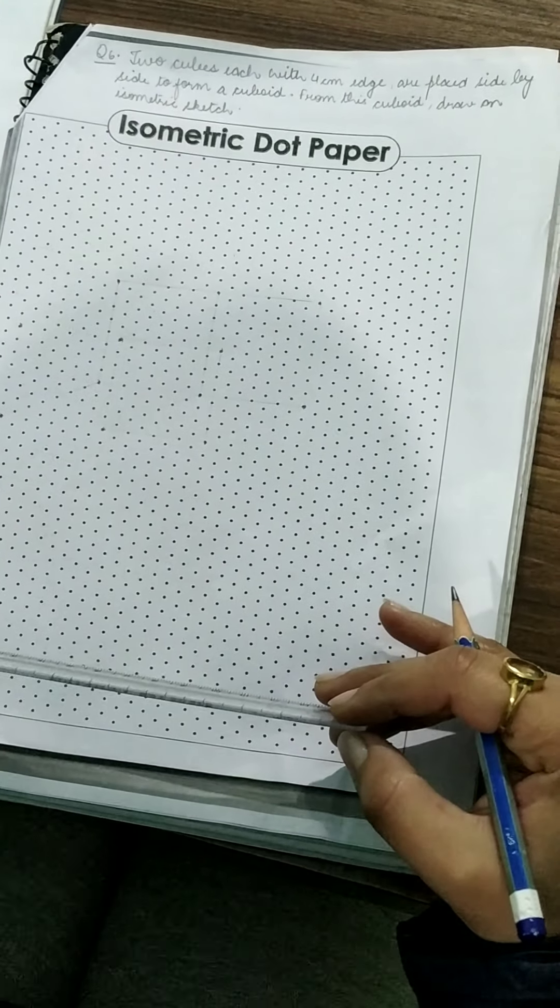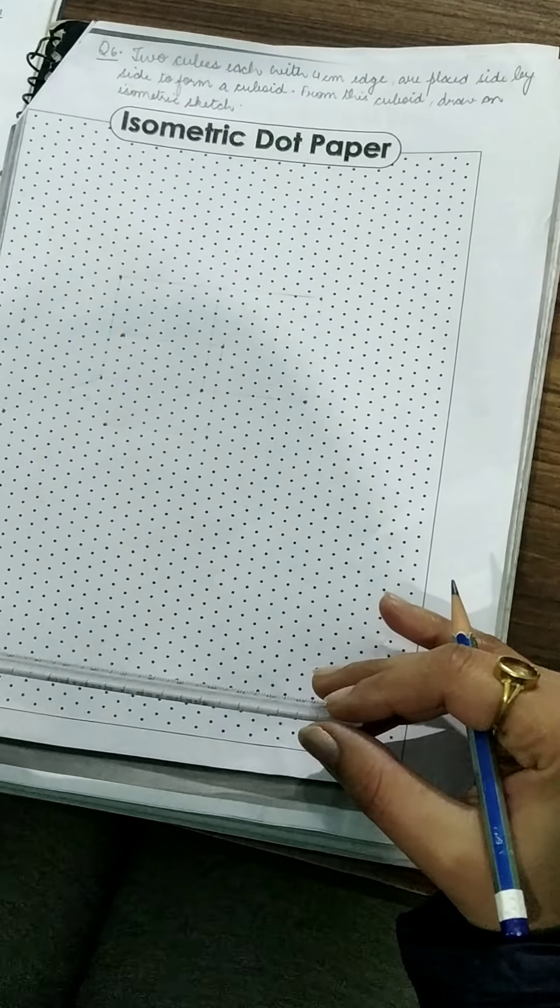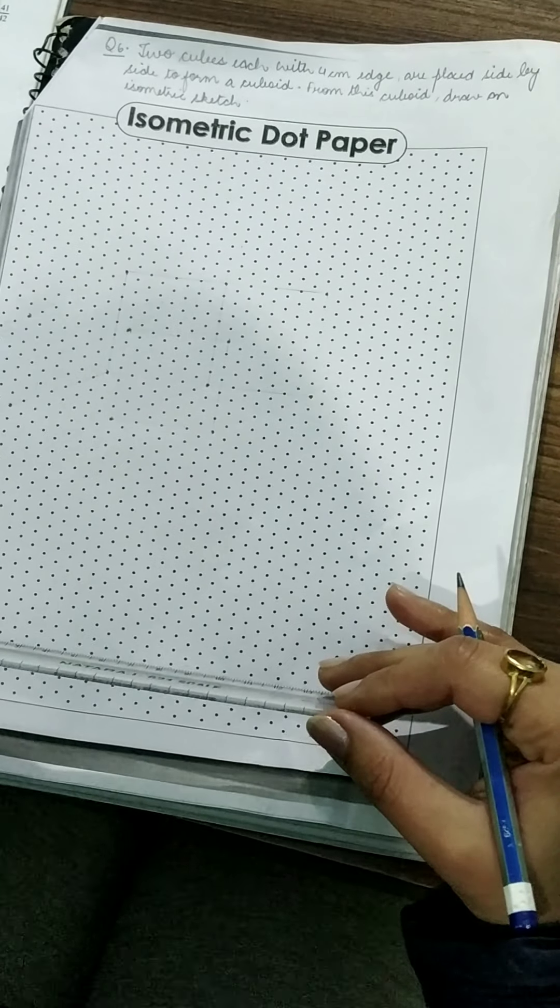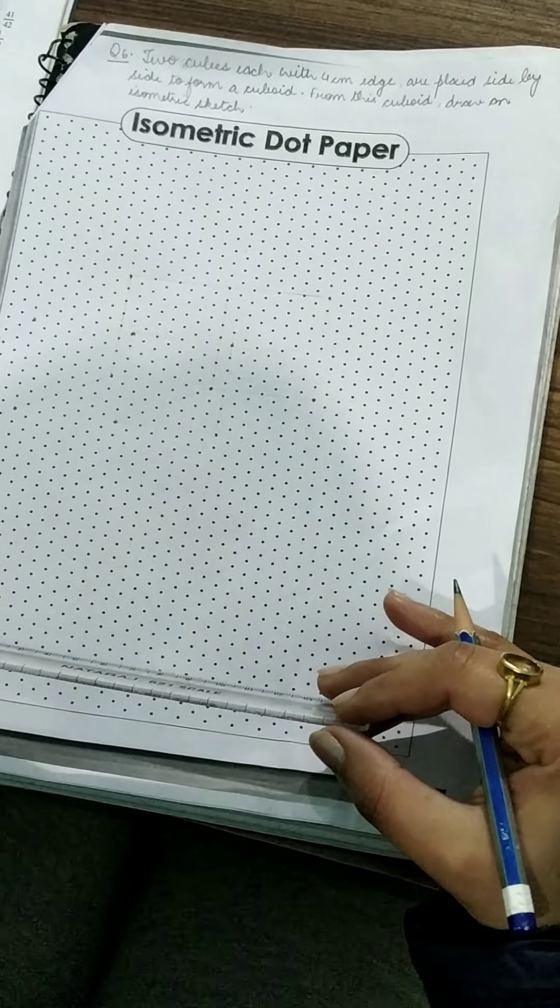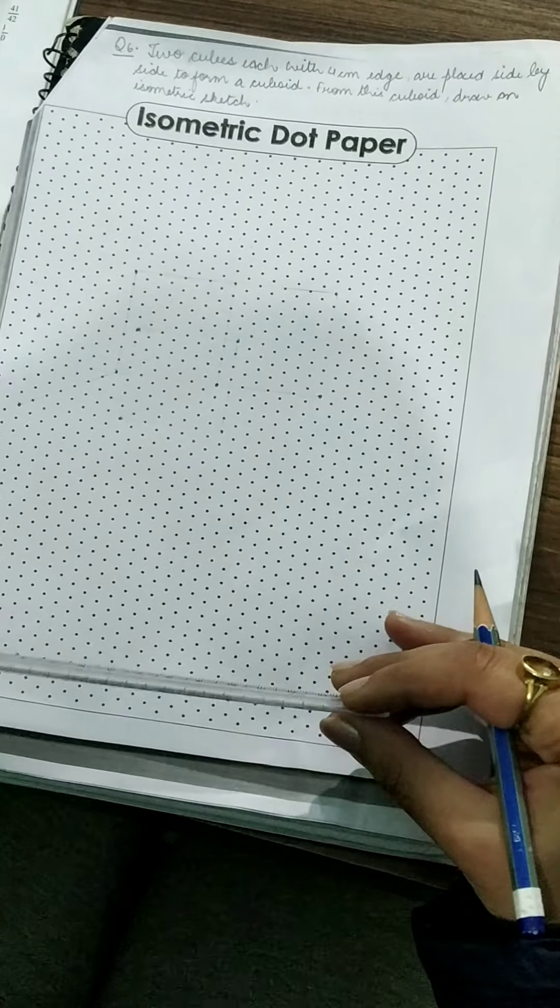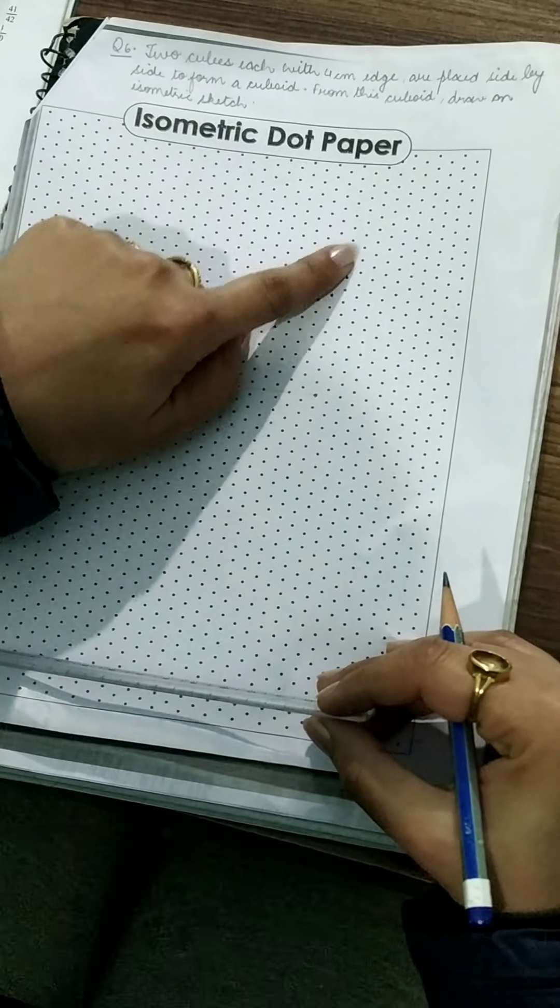Hello children, today in this video we are going to do the remaining questions of chapter 18, that is question 6 and 7 of exercise 18 and question 6 of integrated exercise. For these questions children you need one isometric dot paper.